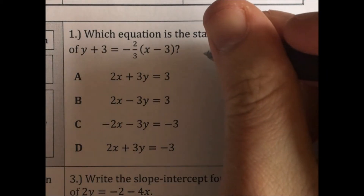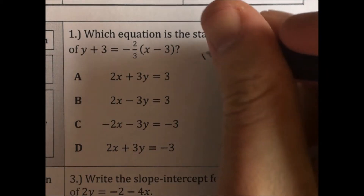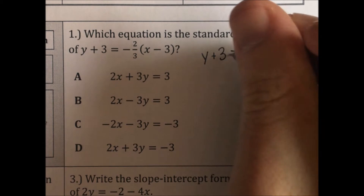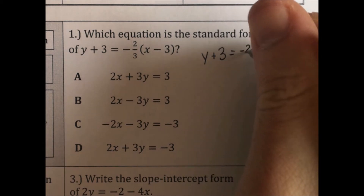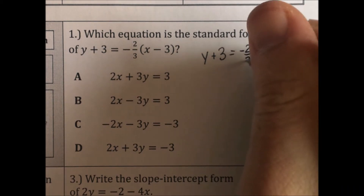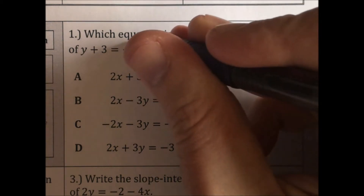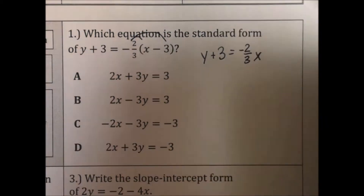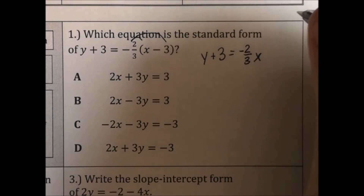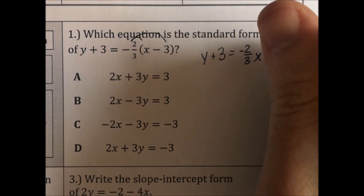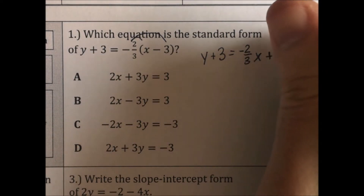The first thing we're going to do is distribute the negative two-thirds. When we distribute there, we get negative two-thirds x. And negative two-thirds of negative 3 is plus 2.